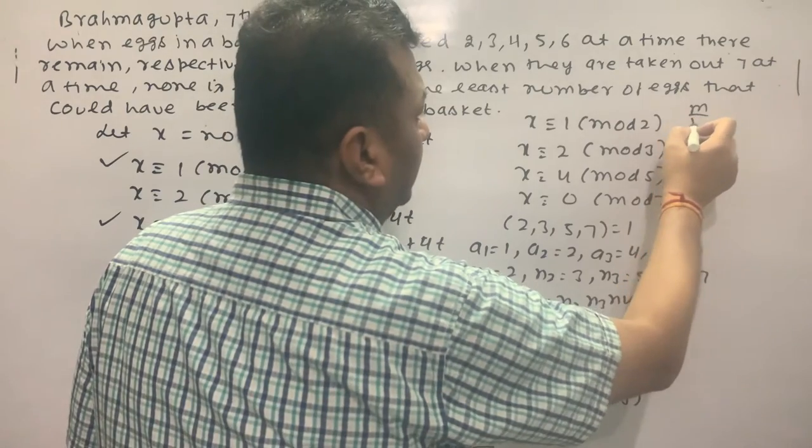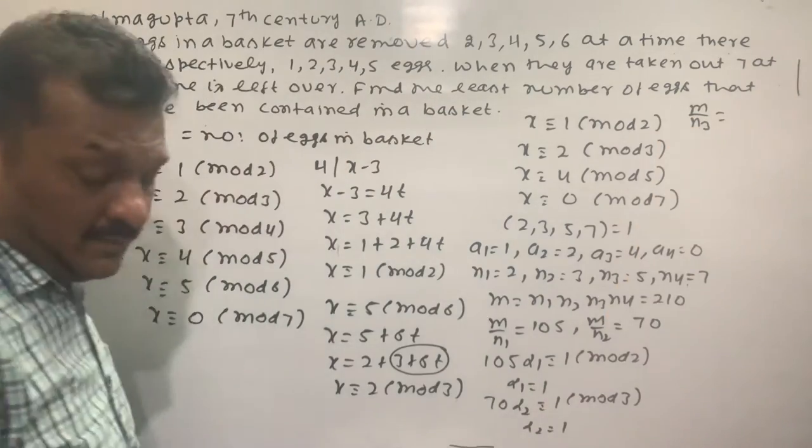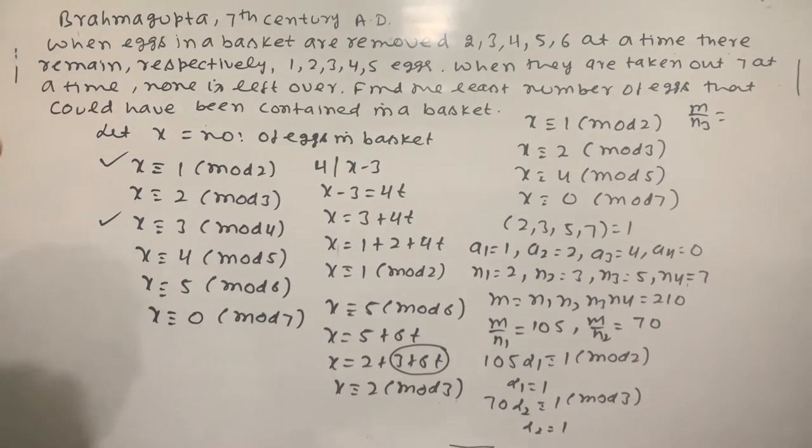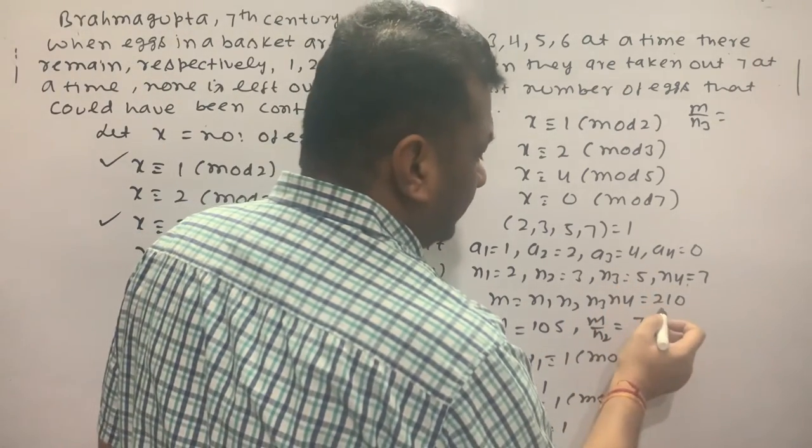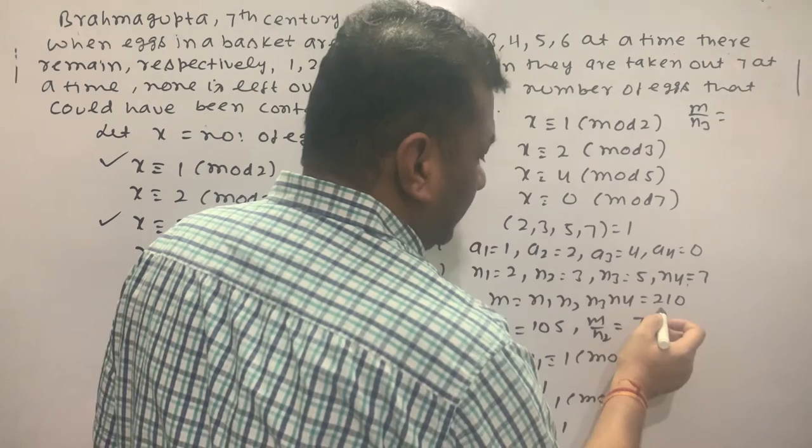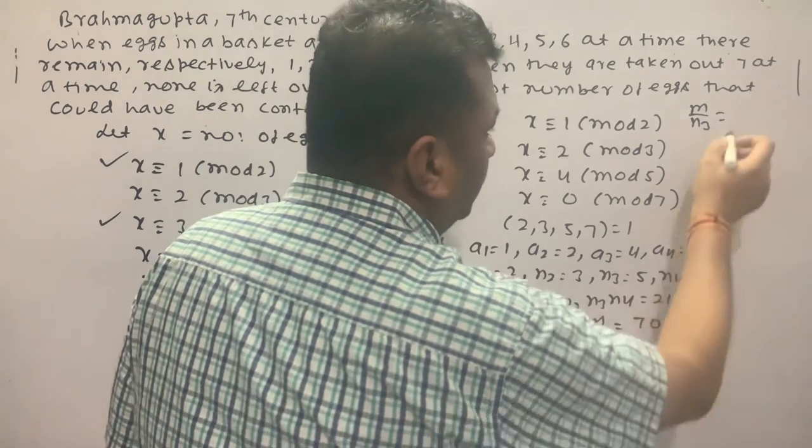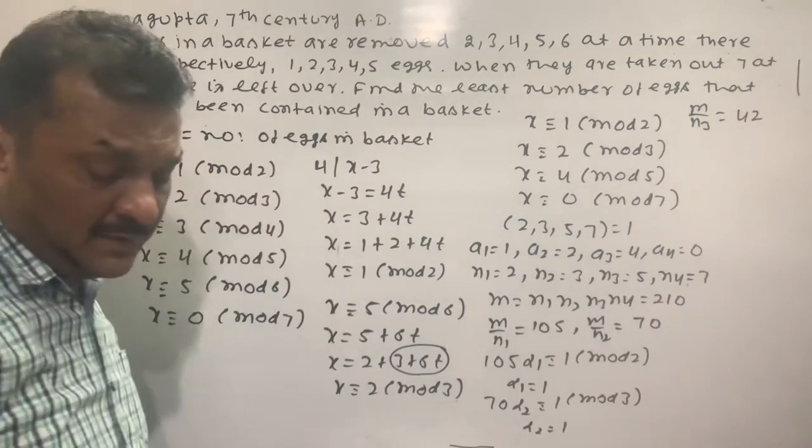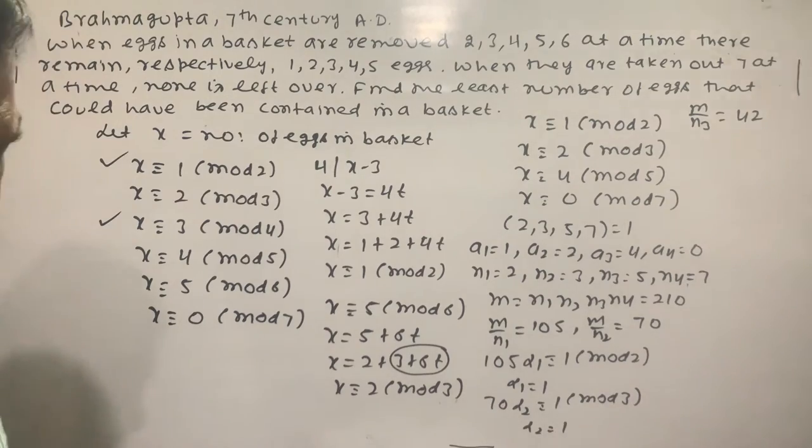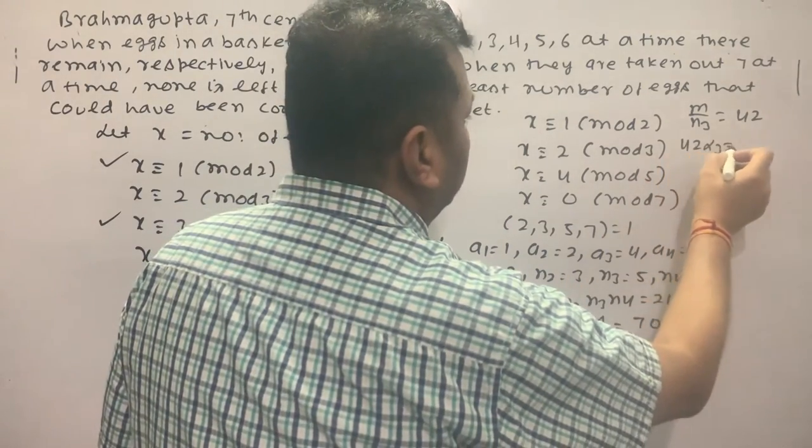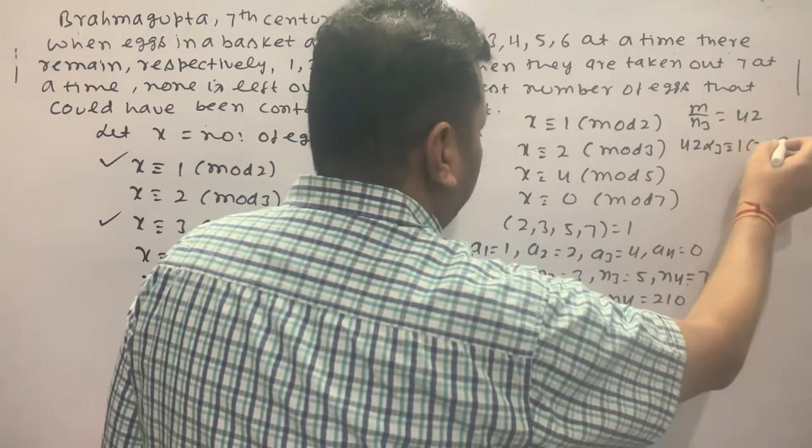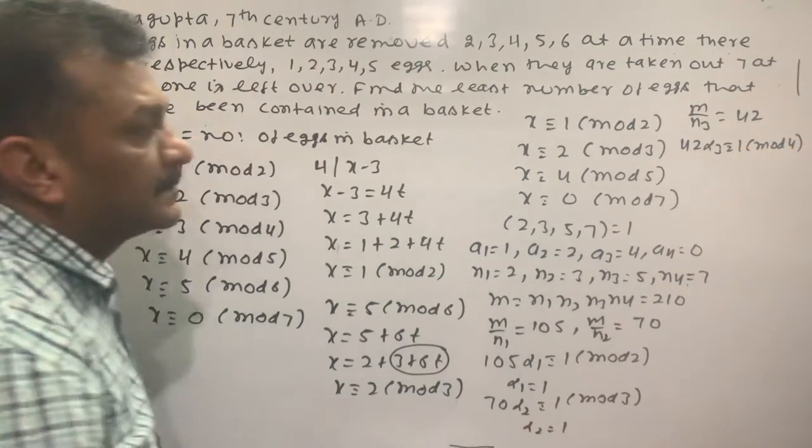Next, M upon N3. M upon N3, 5 divided, is 42. 42 times alpha3 ≡ 1 (mod 5). 42 minus 1 is 41. 12 minus 1 is 11, so alpha3 value is 3.